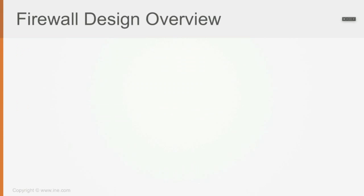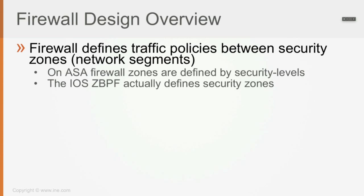A firewall defines traffic policies between its security zones. A security zone is a concept you define — we'll go into more detail as we progress. For example, on the ASA firewall, security zones are represented by security levels. On the IOS Zone-Based Policy Firewall, you have to define your own security zones — there are none built in from a transit perspective. On the ASA, as soon as you define security levels, those behave like security zones by default. On the IOS Zone-Based Policy Firewall, you define zones by name rather than by security level.